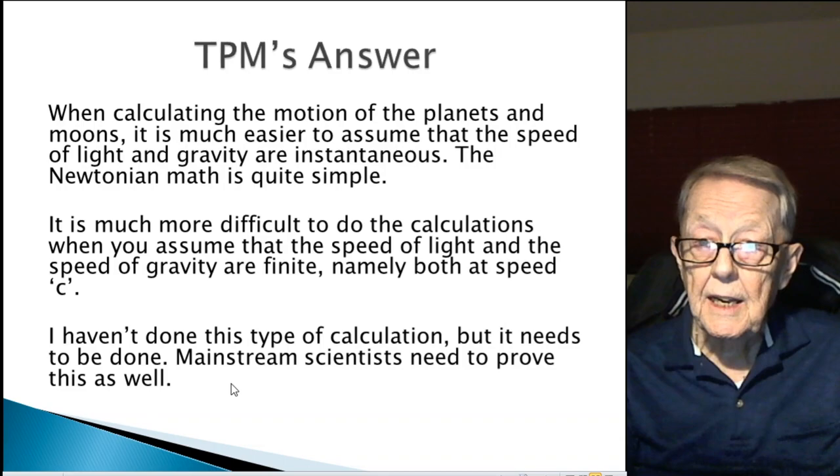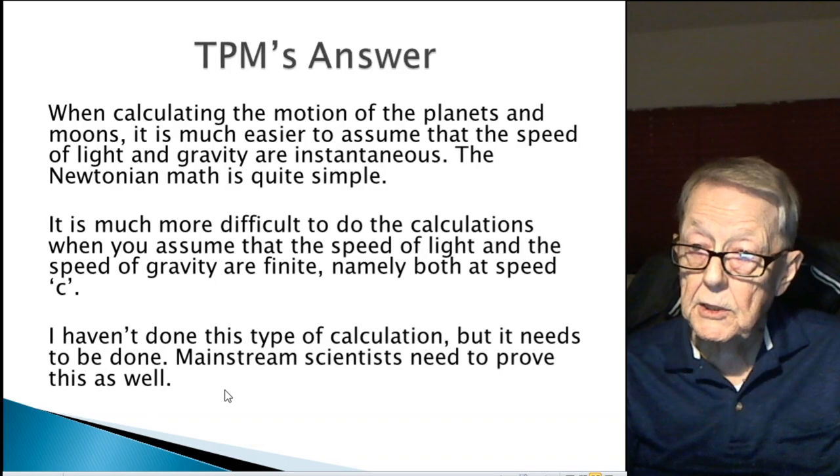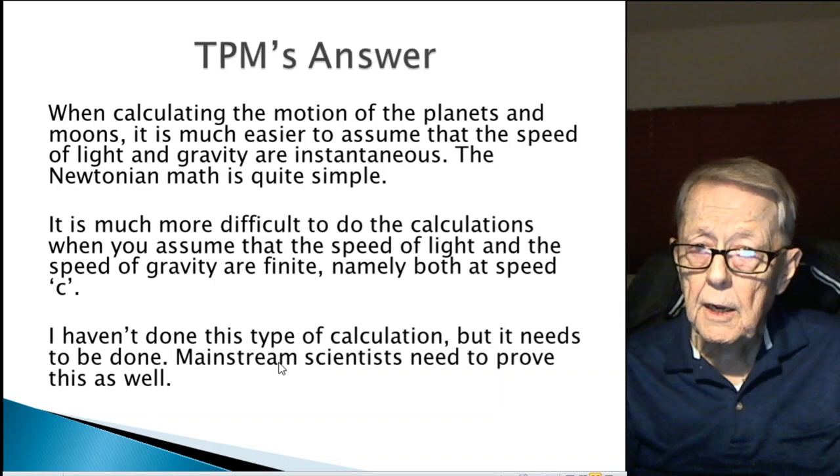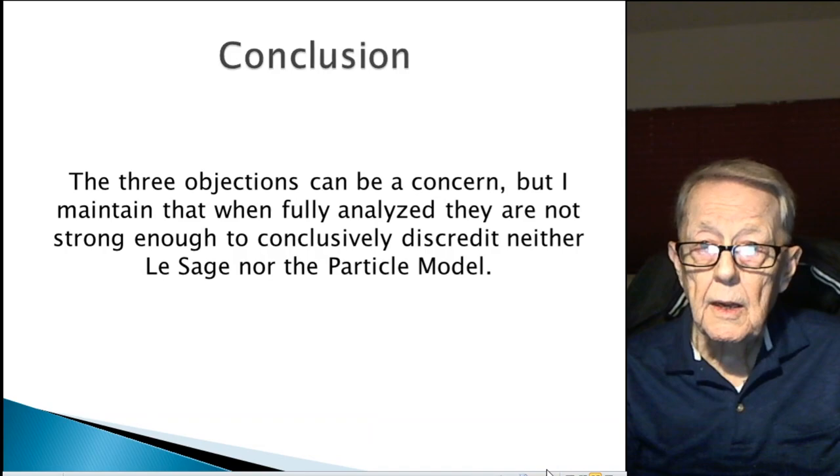If they're going to say, and today they say the same thing, that gravity is speed c, light is speed c, they need to show why this assumption works by using the calculations, using it at speed c.